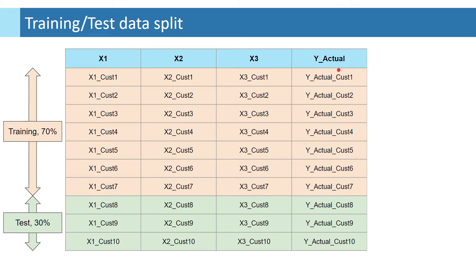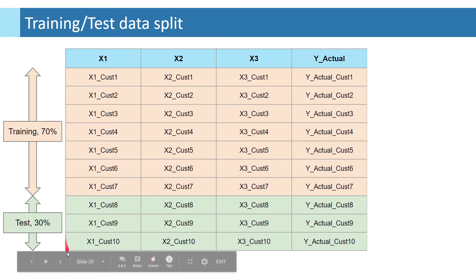Machine learning model splits the dataset into two parts called training set and test set, generally in a 70-30 or 80-20 ratio.